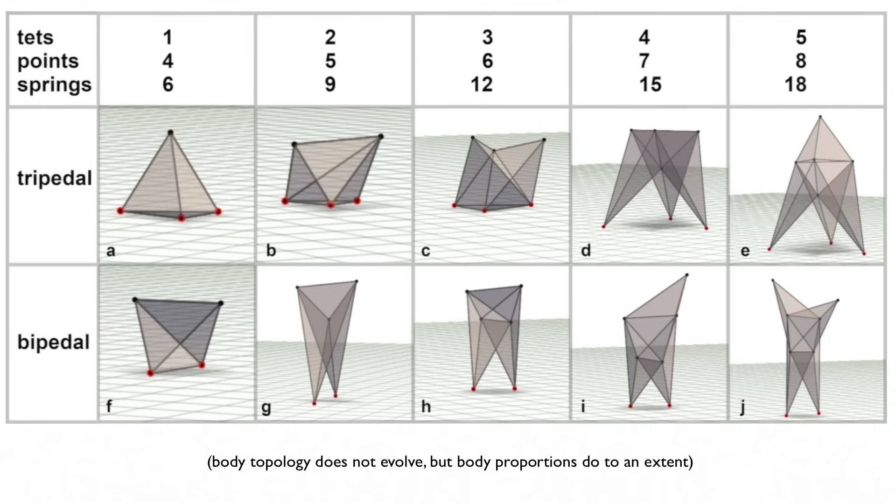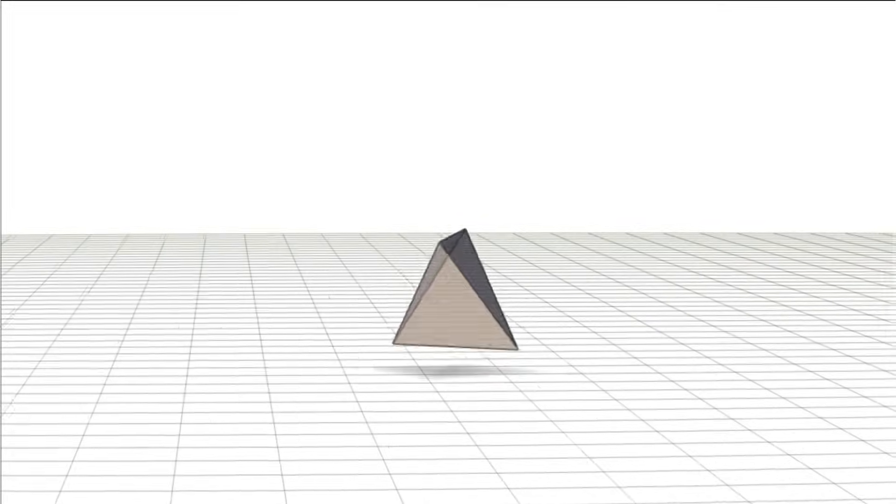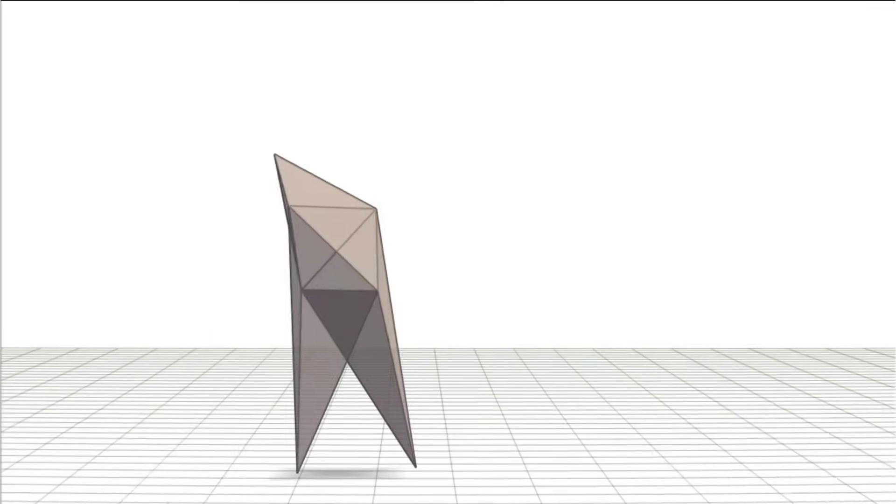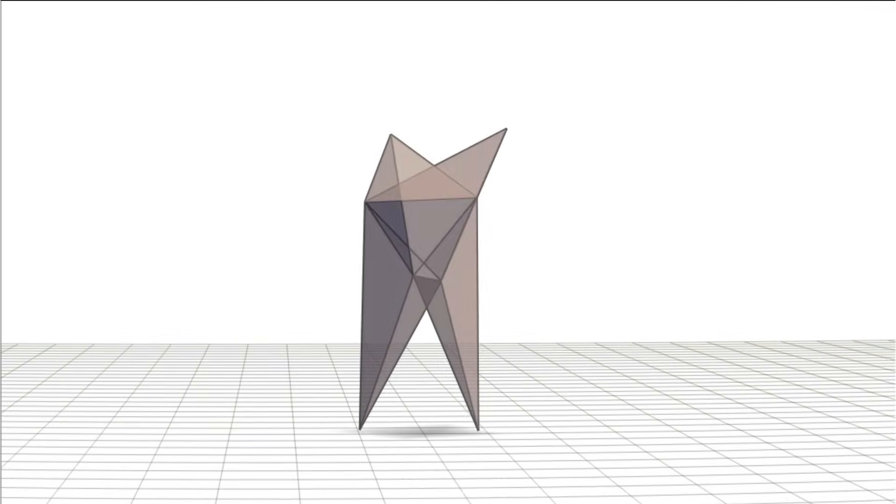They come in several body types and all of them are made of tetrahedra, including one tet, two, three, four, and five tets.